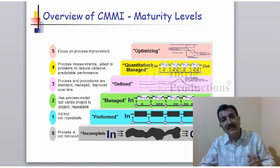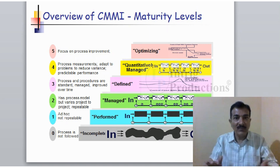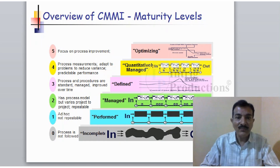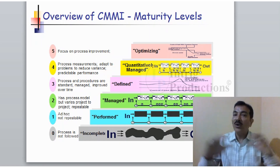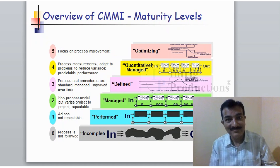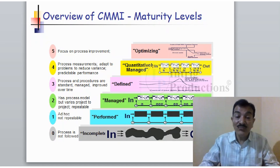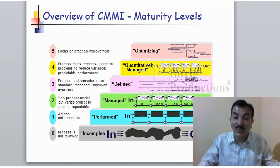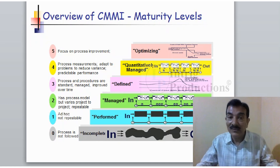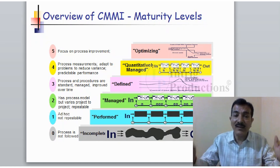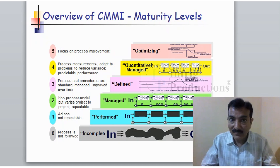CMMI is basically a maturity level model. If you are not following anything, you are naturally at level zero. And if you have something defined — you are following some things and not others — then it is something like you are at level one.